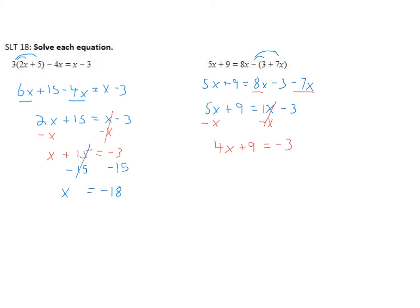This is a two-step equation, so I circle the number and letter together — that tells me what I do last. I need to undo the plus 9 first by subtracting 9 from both sides. That leaves me with 4x, and negative 3 minus 9 gives me negative 12. Then I undo the 4 by dividing by 4. 4x divided by 4 gives x, and negative 12 divided by 4 gives negative 3.